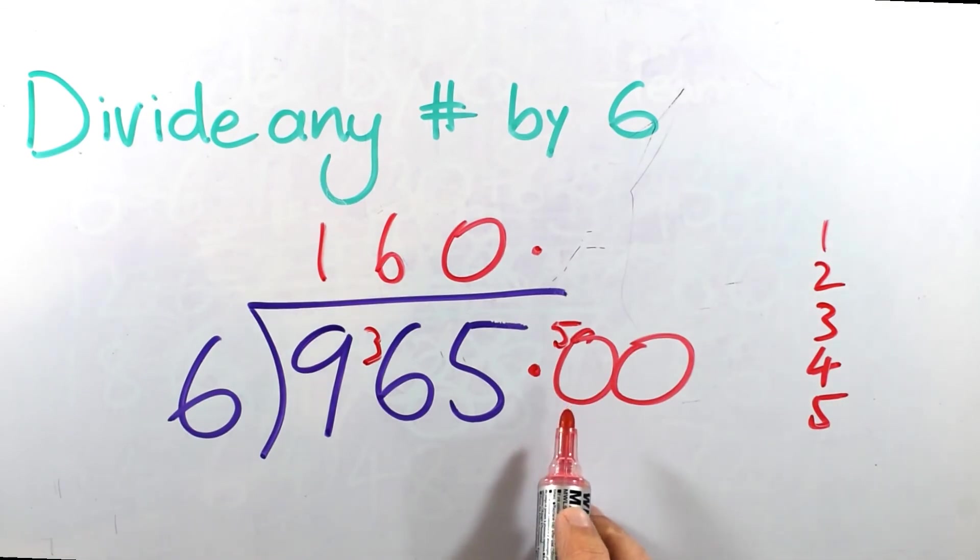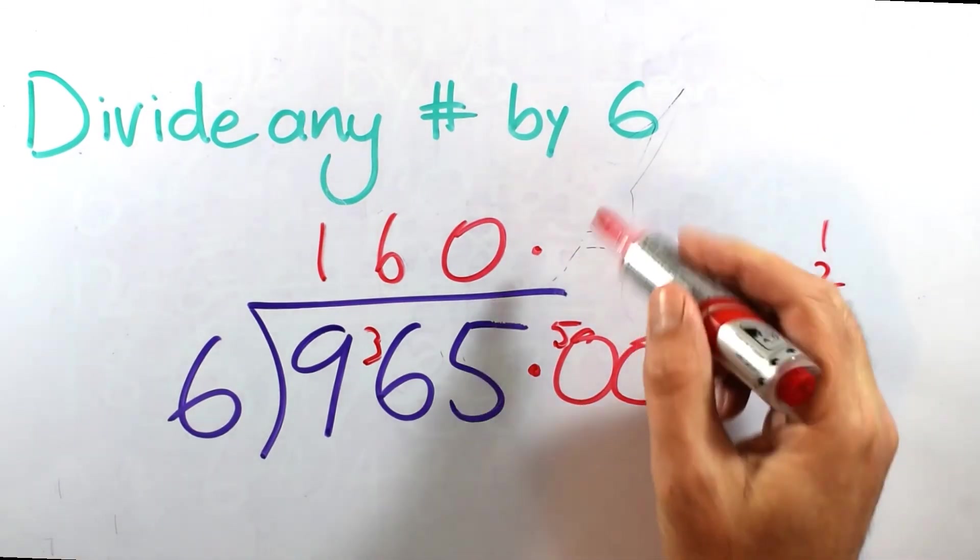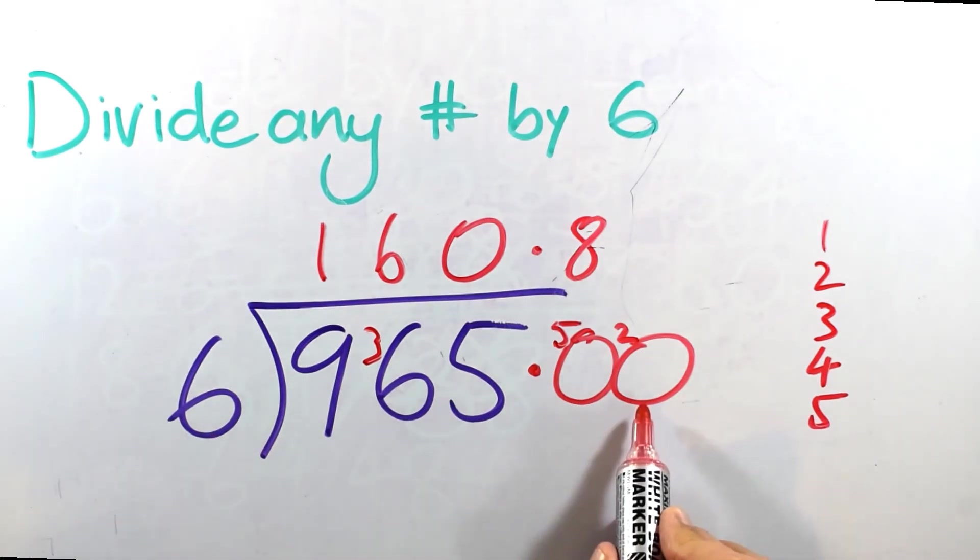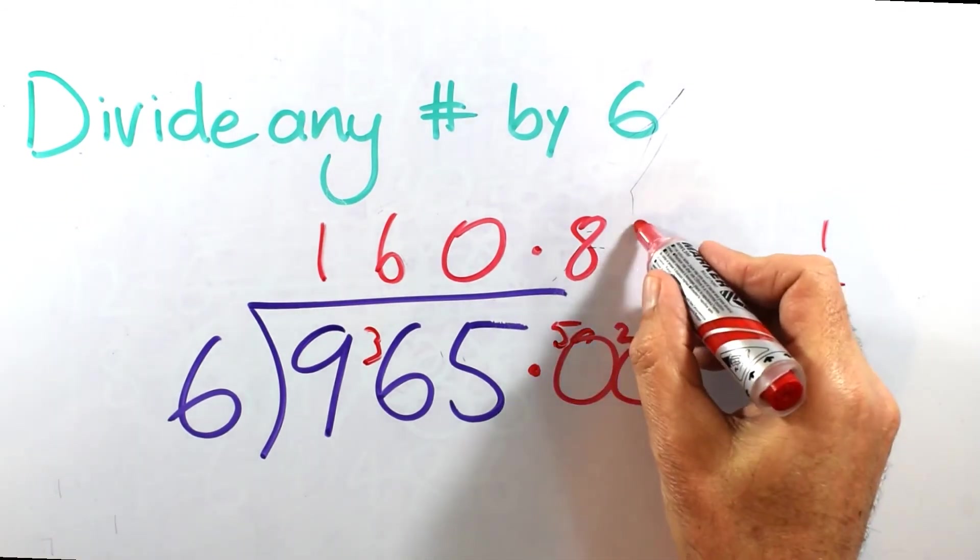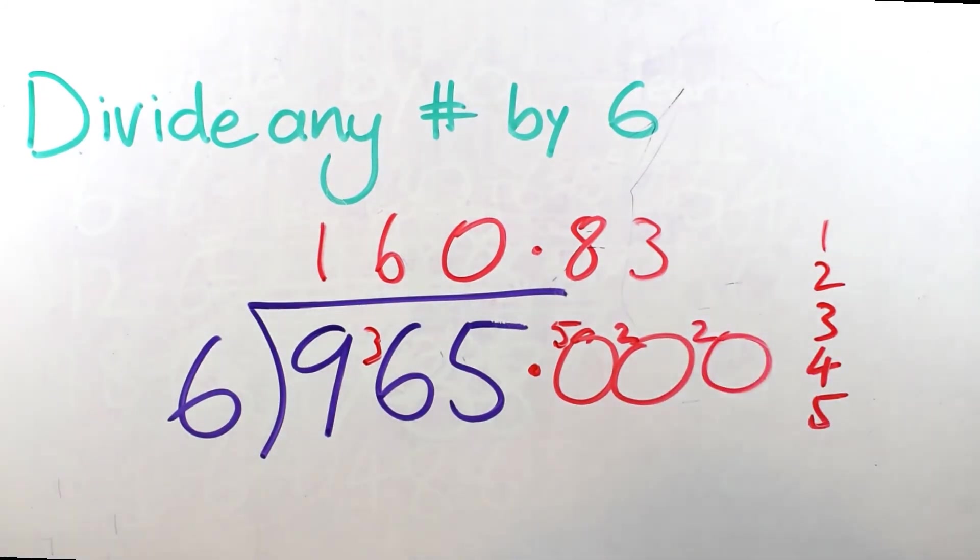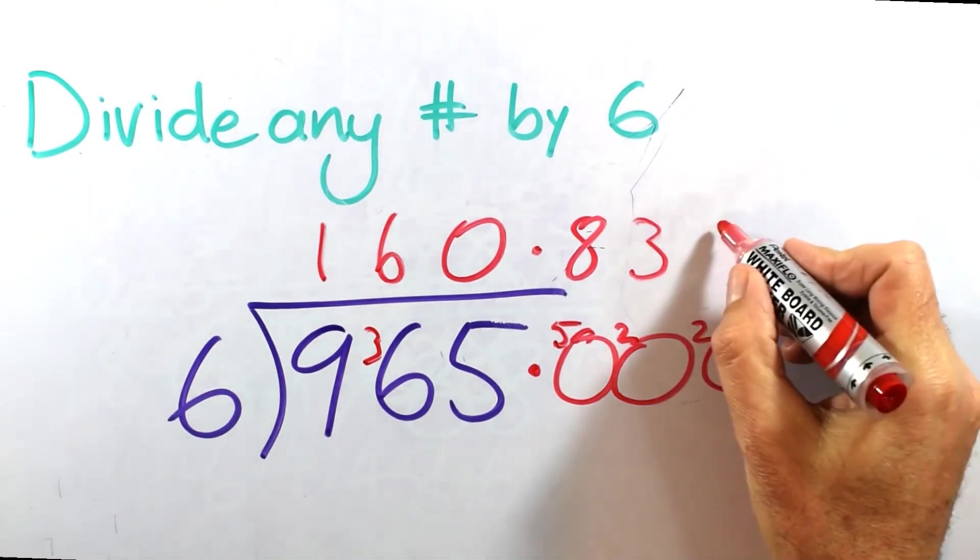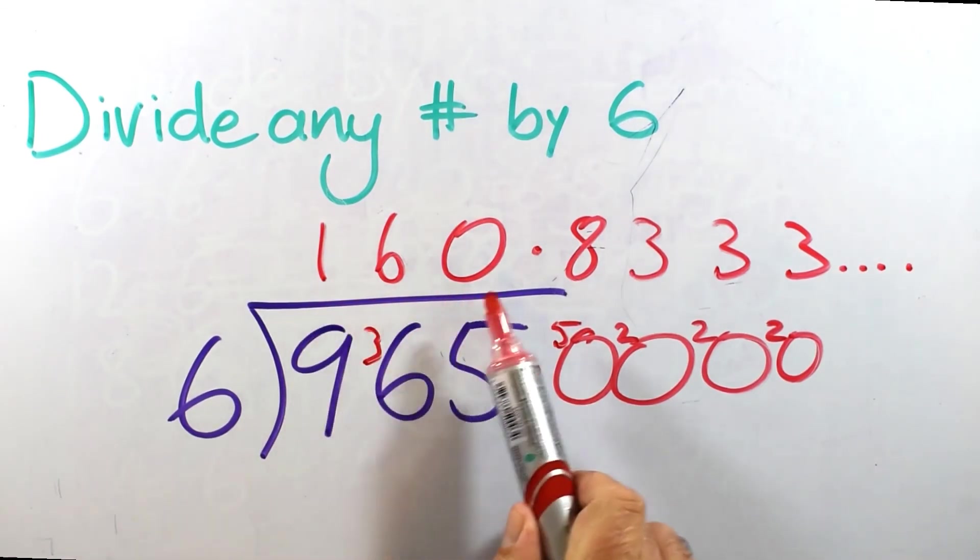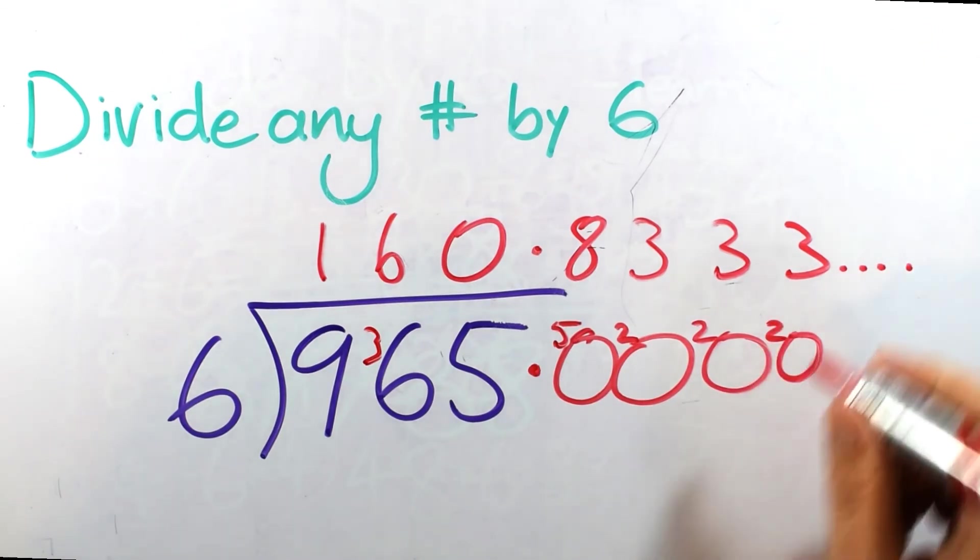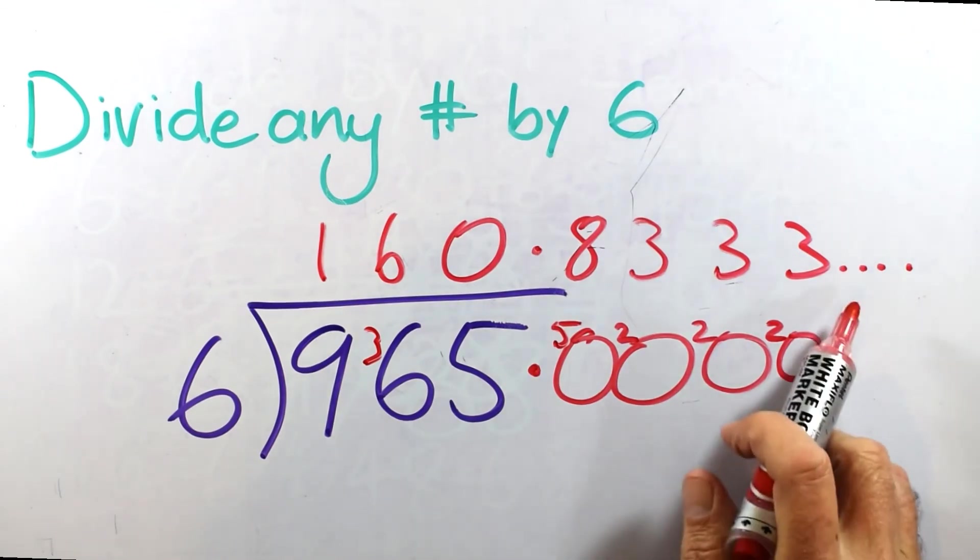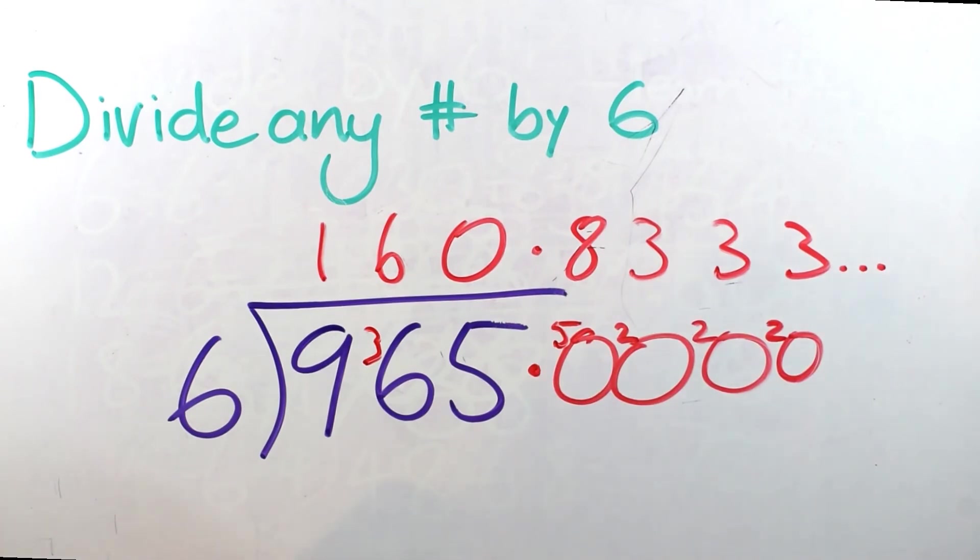Then I've got 50, 50 tenths in this case. So, 6 fits into 50, 48 is the closest, 6 times 8 is 48 with 2 left over. 6 fits into 20, 3 is the closest, 3 times 6 is 18, so 3 there. I've still got some left over. Now, I think what you'll see here is we're going to end up with one of those repeating patterns. 6 fits into 20, 3 times with 2 left over, 3 times with 2 left over and so on and so on. So, my answer would be 160.8333 and when it carries on like that we call it recurring. It's a word you might have heard. I tend to just do this ellipsis which indicates that it goes on and on and on.